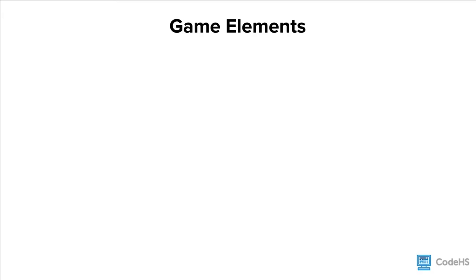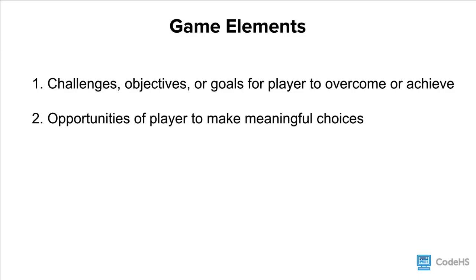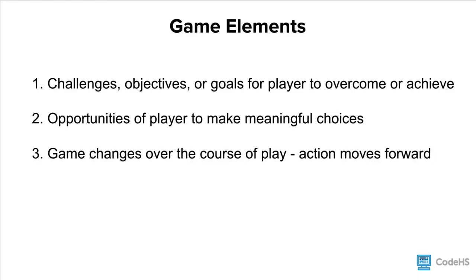Game elements are the defining player interactions and objectives of a game. These elements include challenges, objectives, or goals for a player to overcome or achieve, opportunities for a player to make meaningful choices, game changes over the course of play — basically the action that moves the game forward — and defined rules and procedures.